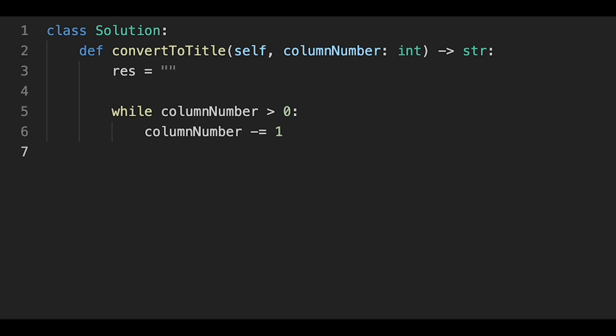And then next, create a new result. We need to convert to characters, so chr of column number modulo 26, and then plus ASCII number of A (ord of A), plus current result variable.